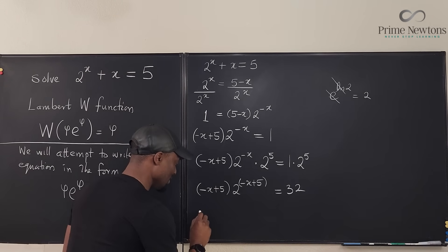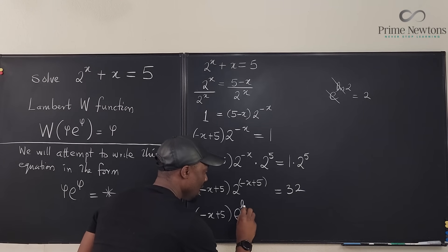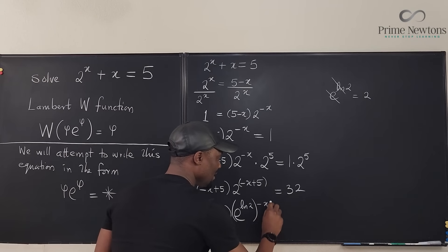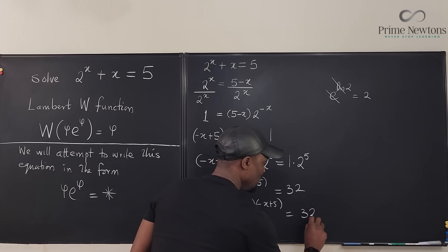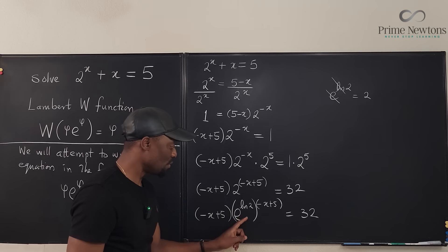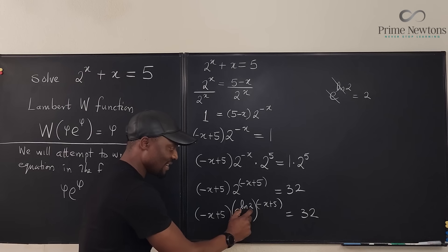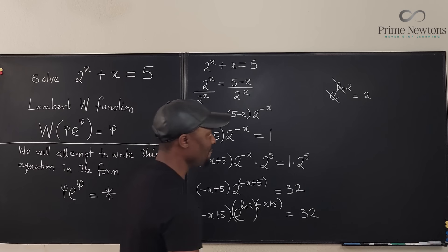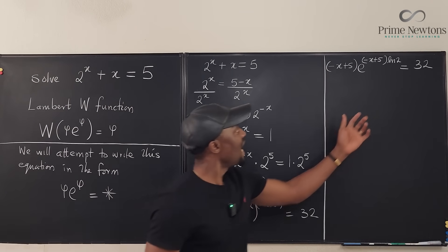So watch what's going to happen. This is going to be (-x + 5) times, instead of writing 2, I'm going to be writing (e^ln 2)^(-x + 5) = 32. I haven't changed anything. I just changed the representation of 2 to e^ln 2. But we know from our laws of exponents that this exponent multiplies this, so that just by multiplying this by this, that's the only thing we have modified.